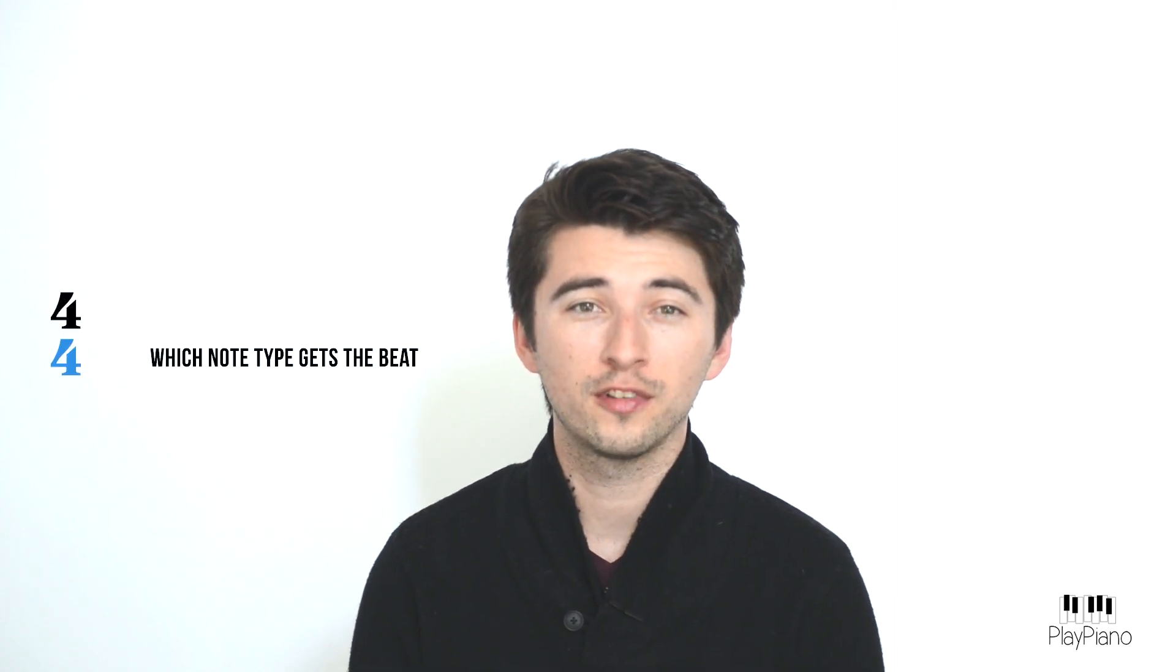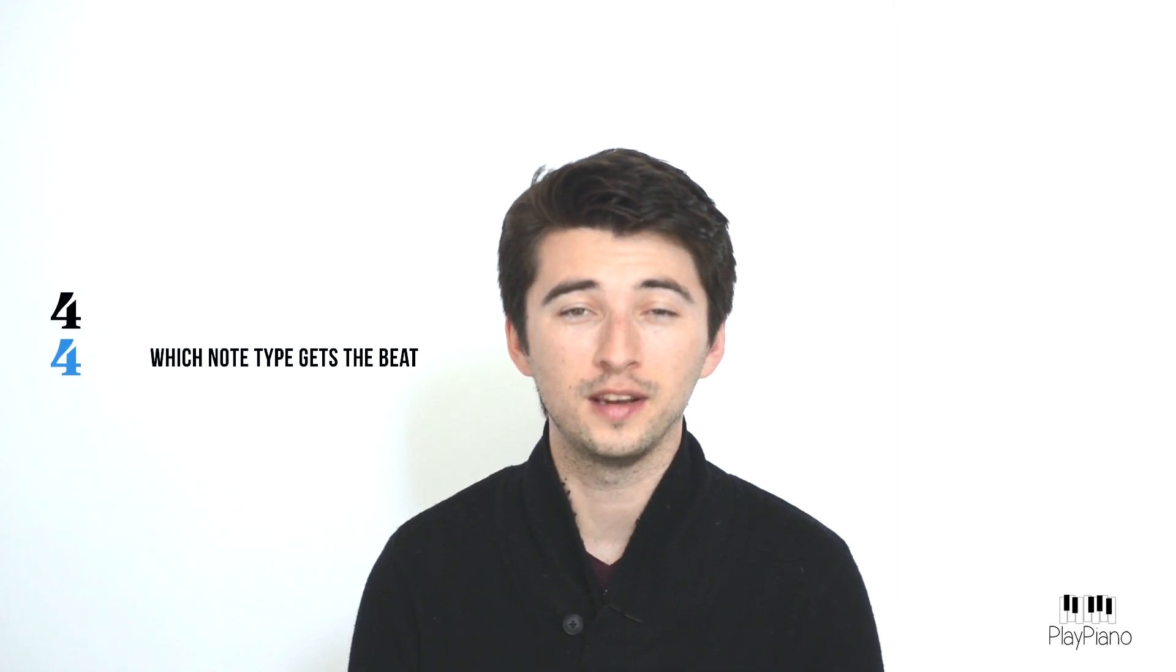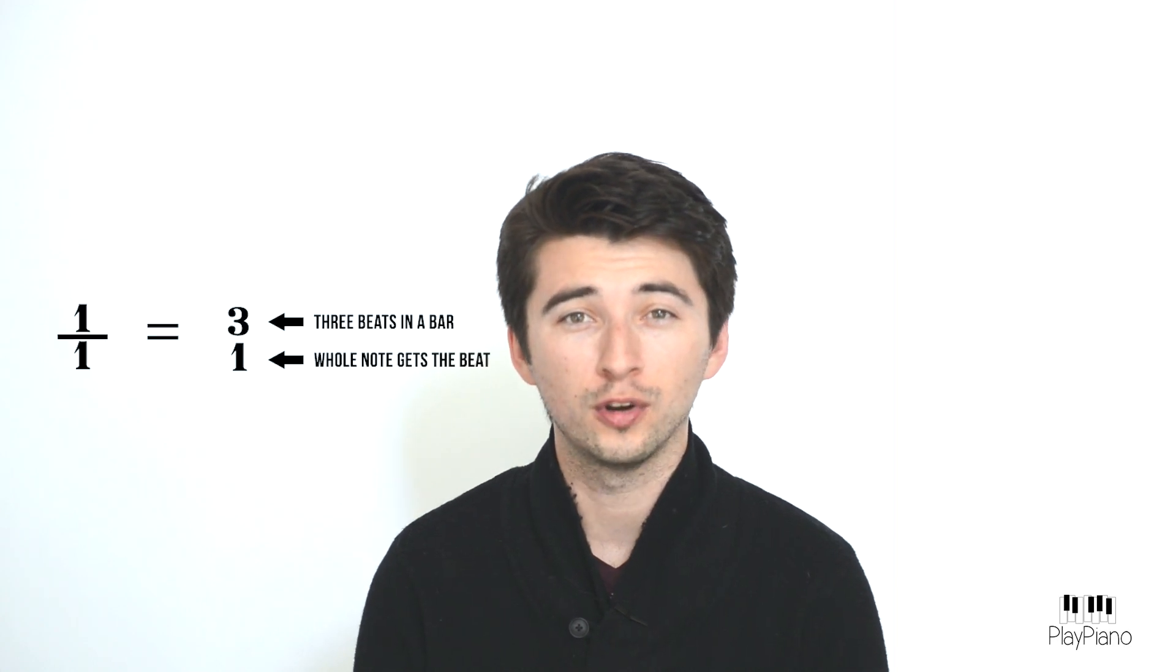Now, as I said before, the bottom note represents what kind of note gets the beat. Here's how to think of it. What fraction is this? Yes, it's one whole. So, if there was a one on the bottom of the time signature, the whole note would get the beat.